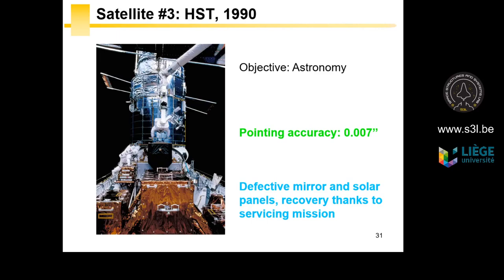The HST — the Hubble Space Telescope — is the famous one. It was the origin of a revolution in astronomy, with beautiful pictures of stars, constellations, nebulae, and galaxies. It was launched with the Space Shuttle in 1990. The pointing accuracy of the optics is less than one arc second. But at the beginning, the telescope just sent fuzzy pictures because there was a defect on the primary mirror. NASA sent two missions with the Space Shuttle to make a hardware upgrade. It's still in orbit, sending beautiful pictures and generating science to understand the universe.